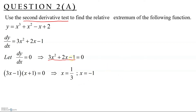After finding the critical points, we differentiate again to find d²y/dx². Differentiating 3x² + 2x − 1 gives us 6x + 2. This is our second derivative.